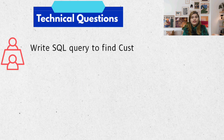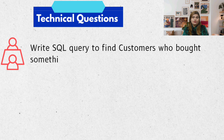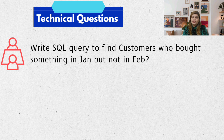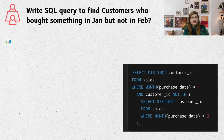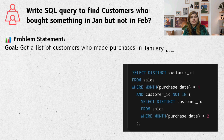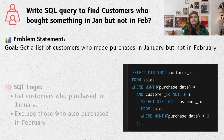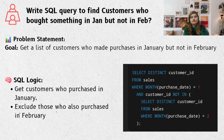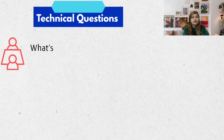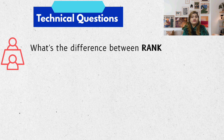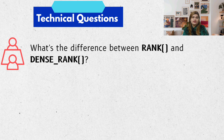Question one: write an SQL query to find customers who bought something in January but not in February. This question checks if you know how to compare groups of people between two time periods — think of it like who came to the party in January but skipped it in February. Question two: what's the difference between RANK and DENSE_RANK?